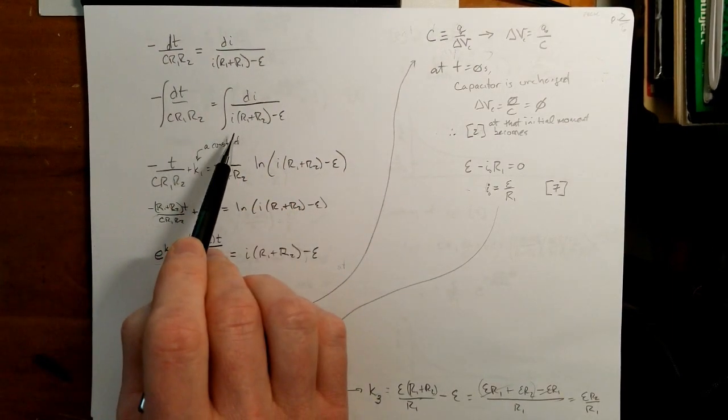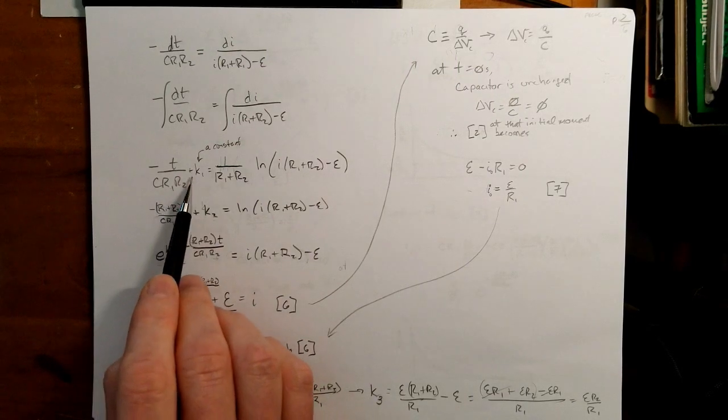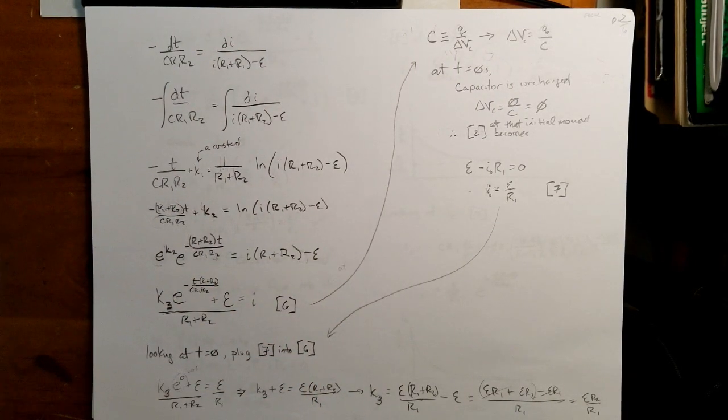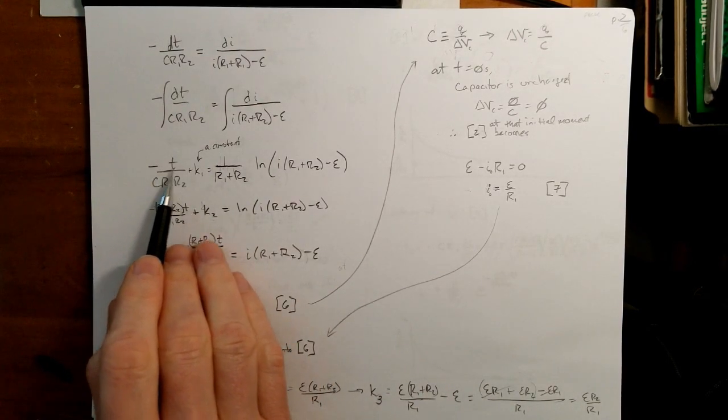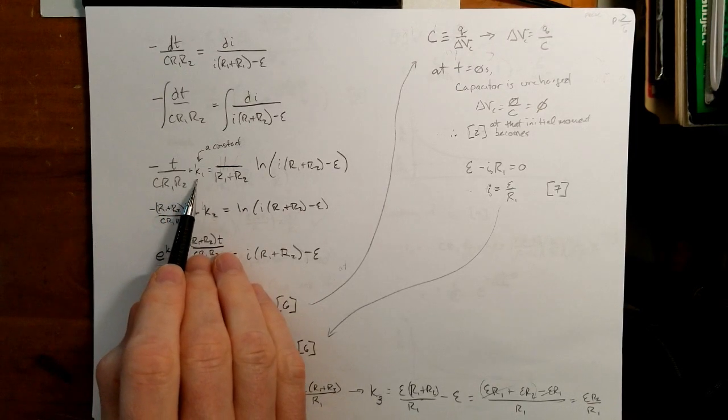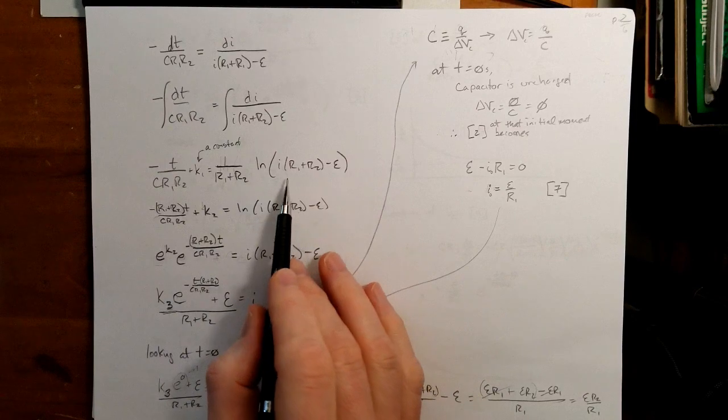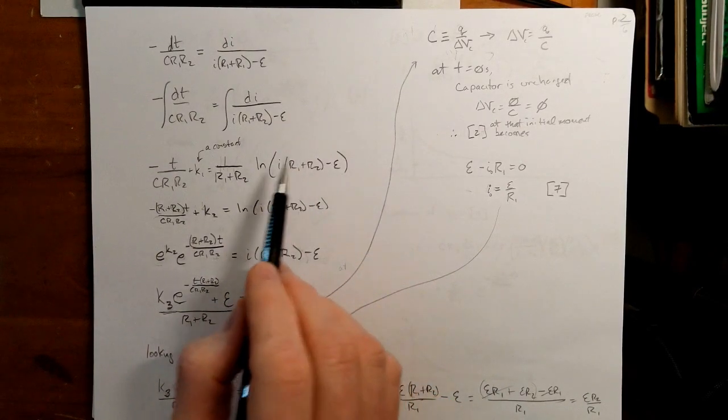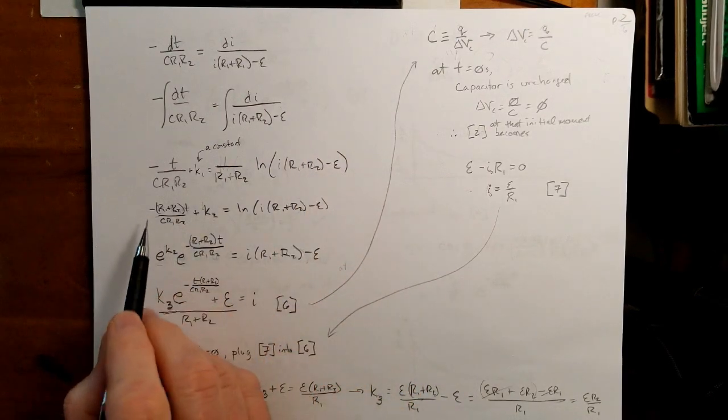Now we integrate, and we end up with some constant, K1. If you see my other videos, this K1 is not necessarily related to any other constant that I've used before, but I got negative t over CR1 R2 plus this constant is equal to 1 over R1 plus R2 times the natural log of this. And if you're this step right here, just some U substitution.